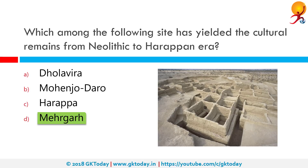Despite being an agricultural settlement, it used only stone tools, which is why it is placed in the Neolithic era. It flourished in the 7th millennium BC. Mehrgarh is located on the Bolan river, a tributary of the Indus, at the eastern edge of the Baluchistan plateau, overlooking the Indus plain.